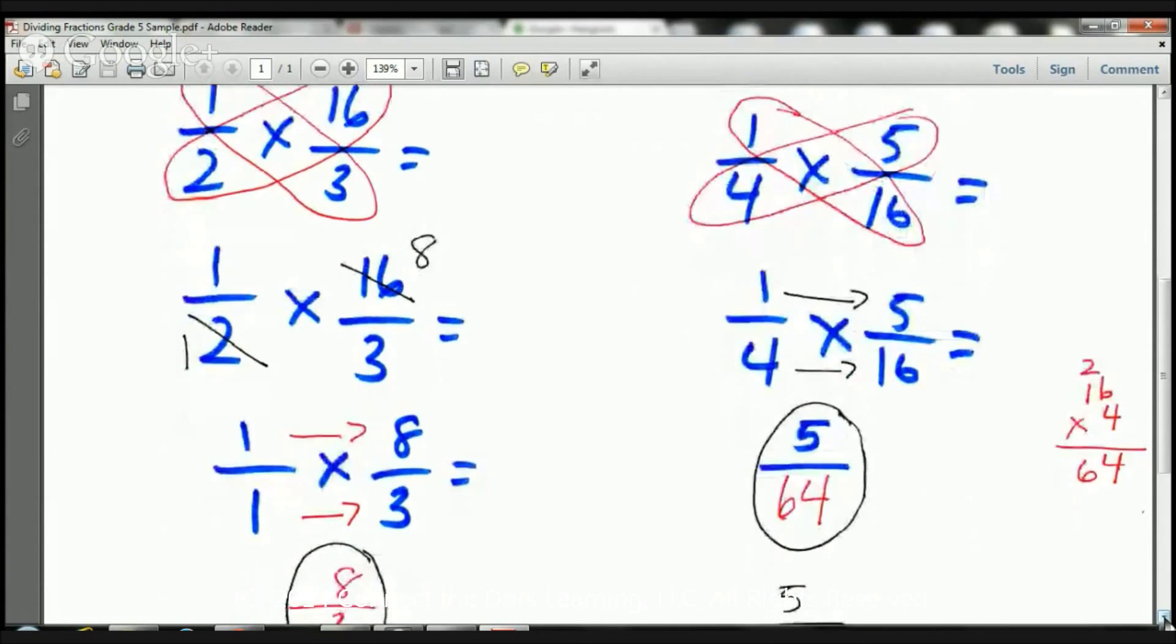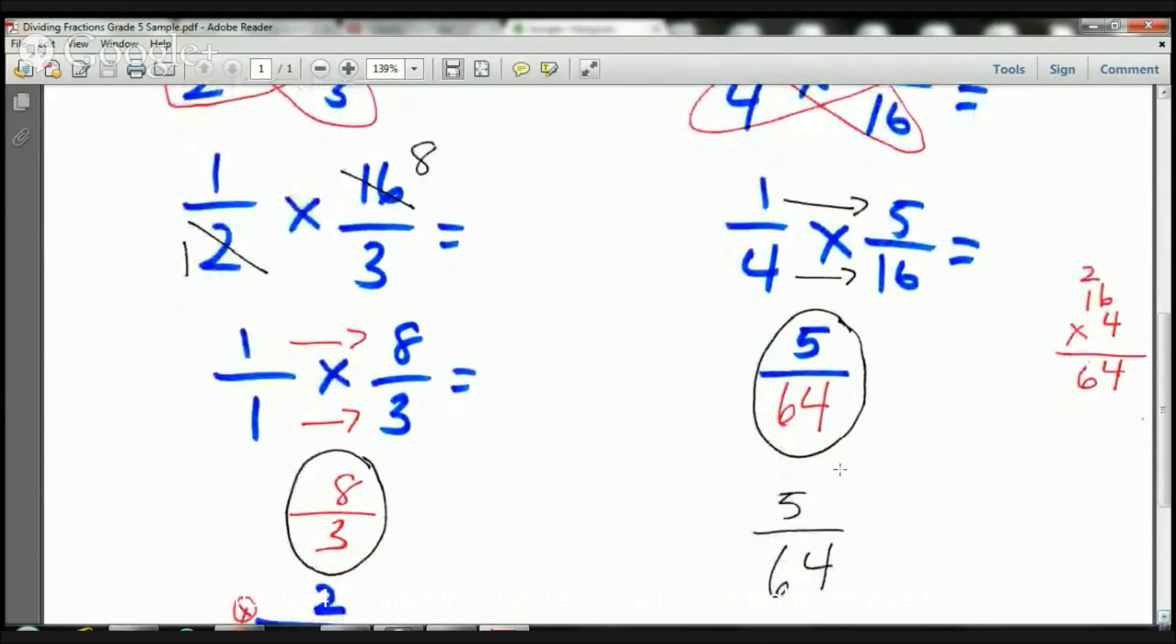So, let's go ahead and let's cross that two out. That two's going to become a one. Let's cross that sixteen out. That sixteen's going to become an eight. Two goes into sixteen eight times. That's why I crossed out that two. That will become a one, and then I crossed out that sixteen. That's going to become an eight, and once I do that, then I can multiply straight across. One times eight is going to be eight. One times three is going to be three.